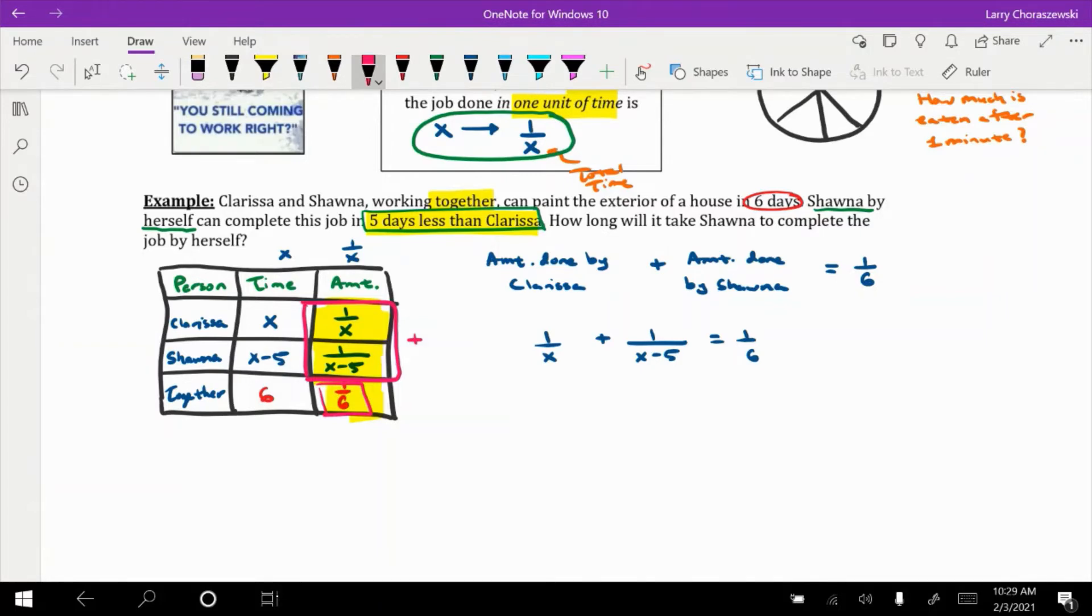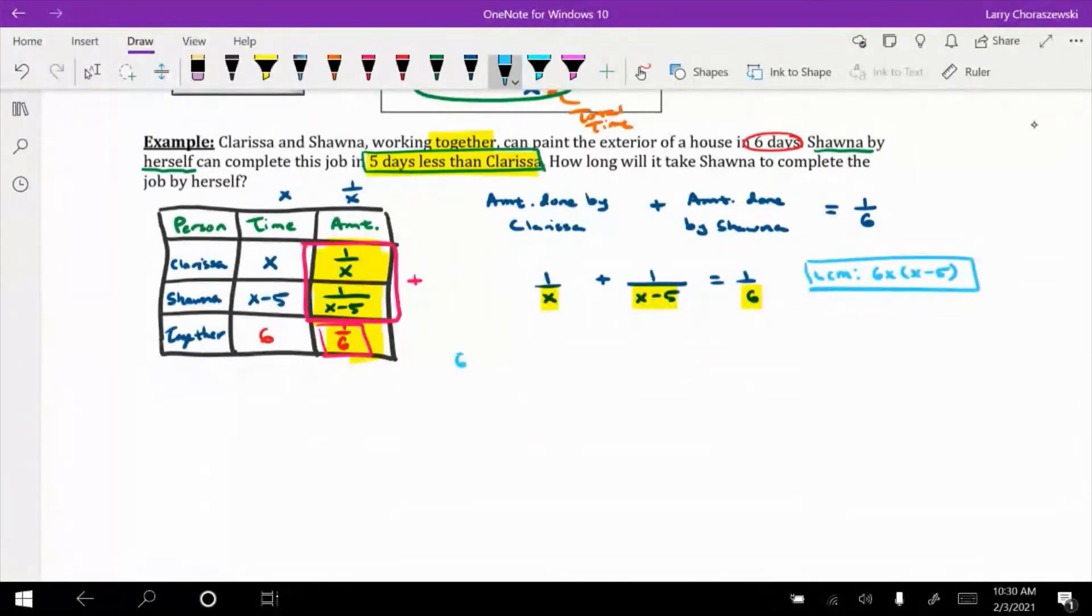Before we go to solve it, do you guys have any questions about how it was set up? All right, so let's be in the mindset of how to solve a rational equation, something we were discussing last week. What you want to do for a rational equation is multiply each part by an LCM. That's going to cancel out all three of these denominators once we've simplified. Now the LCM to use is going to be six x times the quantity x minus five. And what we'll do with that is we'll put it in front of all three fractions. We'll simplify and then see what kind of equation that we get.